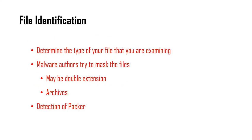The first process in static analysis is file identification — determining the type of file you are examining. Malware authors try to mask files by using double extensions. For example, an executable malware file might be renamed from one.exe to one.exe.doc, so it appears to be a document file. Unknowing victims can then execute that malware. Malware authors use double extensions or compression tools to mask the files.